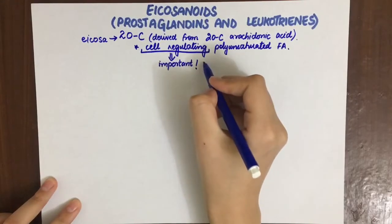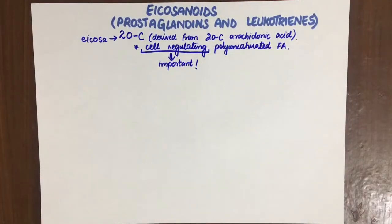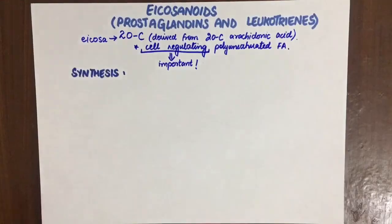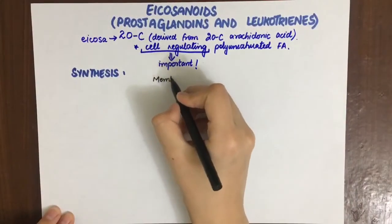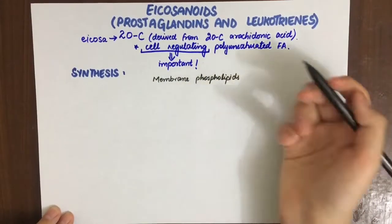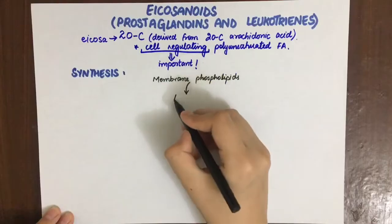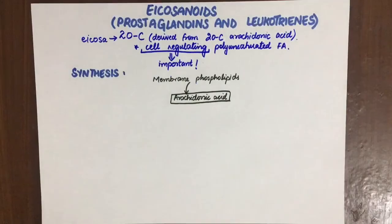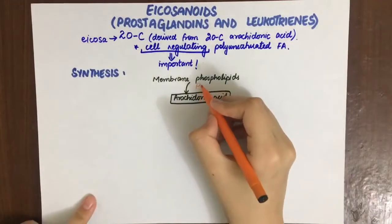Let's look at the synthesis. Synthesis of eicosanoids takes place when membrane phospholipids are acted upon by phospholipase A2 and converted into arachidonic acid, which is a 20-carbon fatty acid. This arachidonic acid can be acted upon by two enzymes: cyclooxygenases and lipoxygenases.